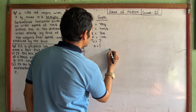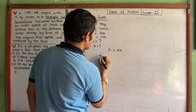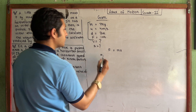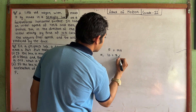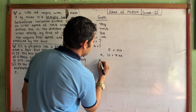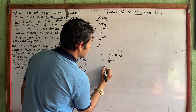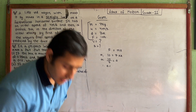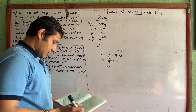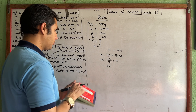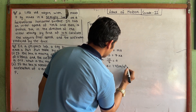What is the formula? F is equal to MA. Force value is 10 Newton, mass value is 7 kg into A, so 10 upon 7 is equal to A. Therefore A is equal to 1.43 meters per second square.